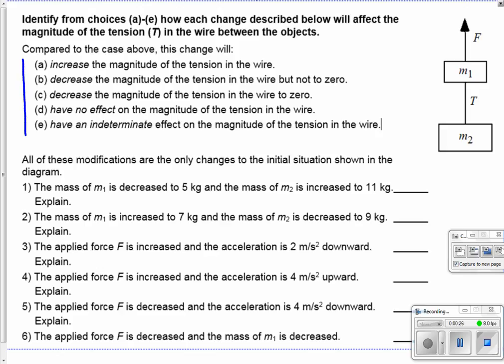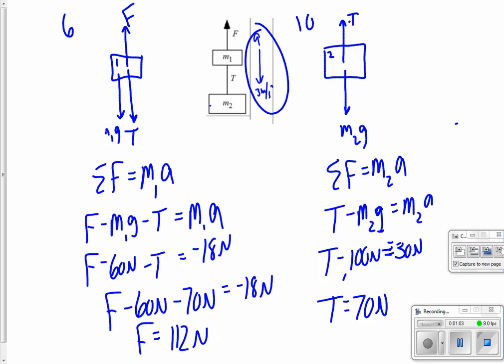Remember, the original we had a six kilogram and a ten kilogram mass. And that's the only changes we're making. So we could say, okay, if I change it from six and ten to five and eleven, then what happens in terms of A, B, C, D, and E? Increasing the tension, decreasing the tension, decreasing the tension all the way to zero, have no effect on the tension or have some indeterminate effect. So we're really looking at if I change the masses, what happens to the tension?